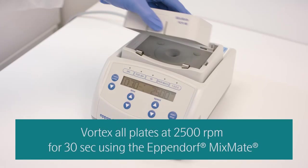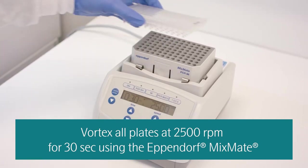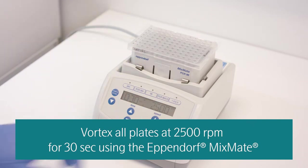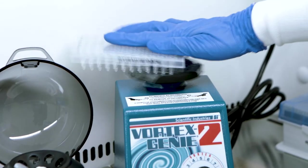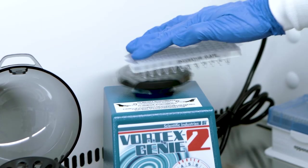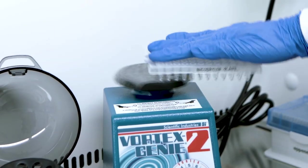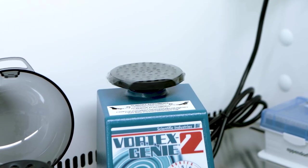Plate vortexing should be performed using the Eppendorf Mixmate and the appropriate tube holder. This is required for the pre-PCR plate vortexing, but optional post-PCR. If manual plate vortexing is used post-PCR, it must be done using the technique shown here. Please watch the O-Link vortexing technique video before continuing.